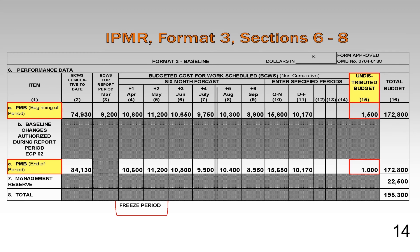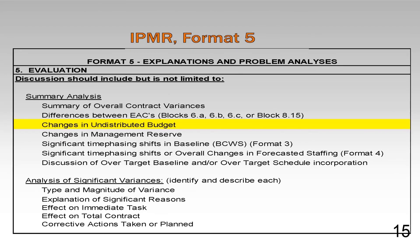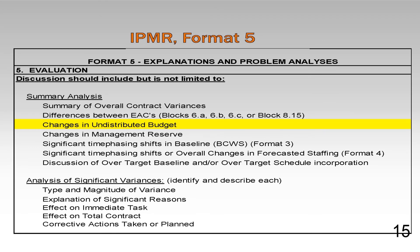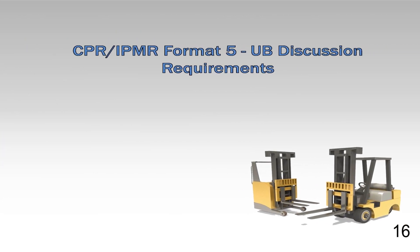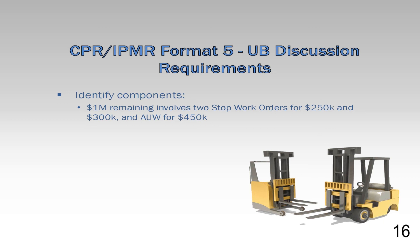The DOE IPMR Format 5, Explanations and Problem Analyses, is a narrative report prepared to amplify and explain data provided in the other IPMR formats. The DOE IPMR instructions, available on both the internal and external websites listed on the last slide of this training module, stipulate other discussion requirements involving undistributed budget on the Format 5. The contractor must identify the components of the UB. For example, the $1 million of UB remaining, as seen in Formats 1 and 3, involves two stop work orders—one $250,000, another $300,000—and $450,000 of authorized unpriced work received during the reporting period.